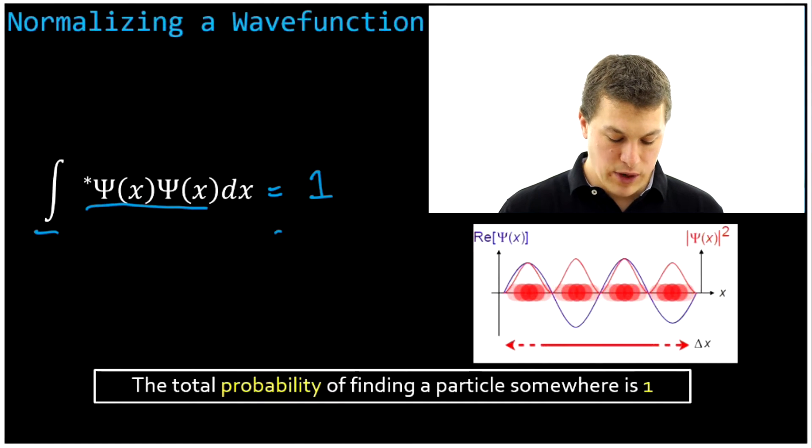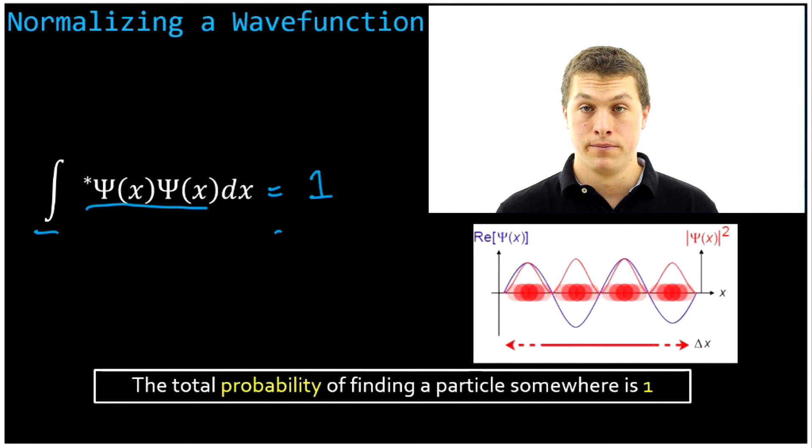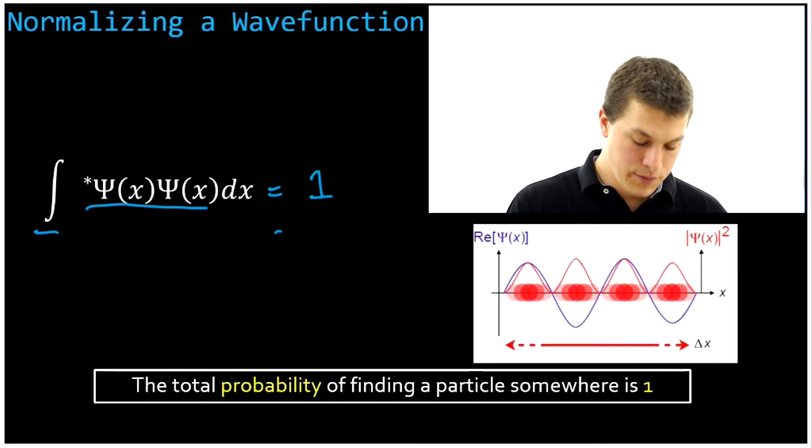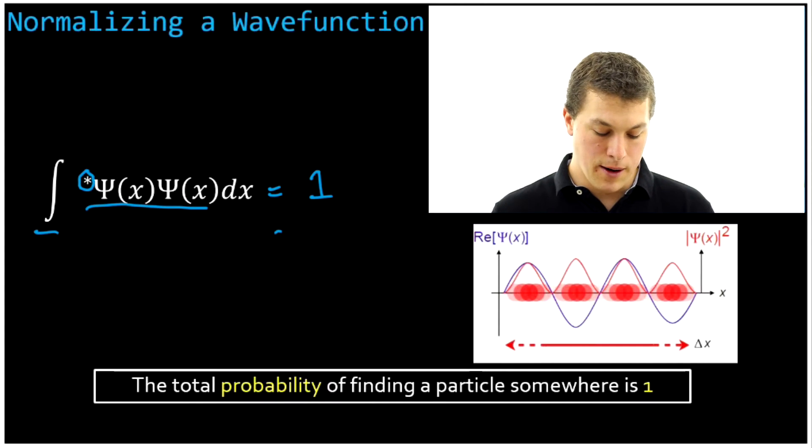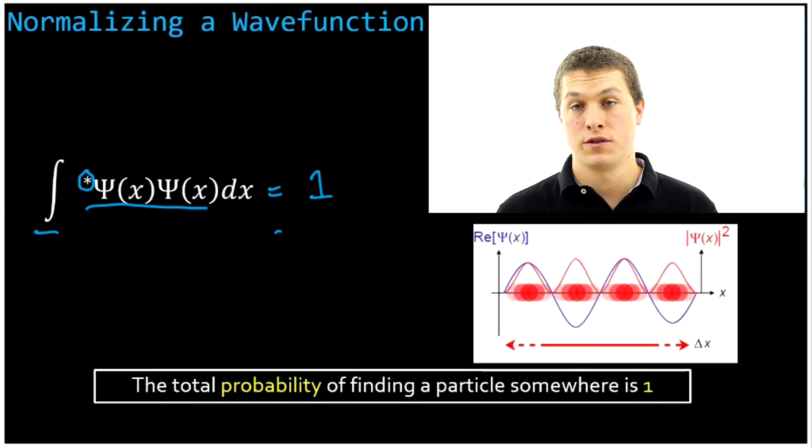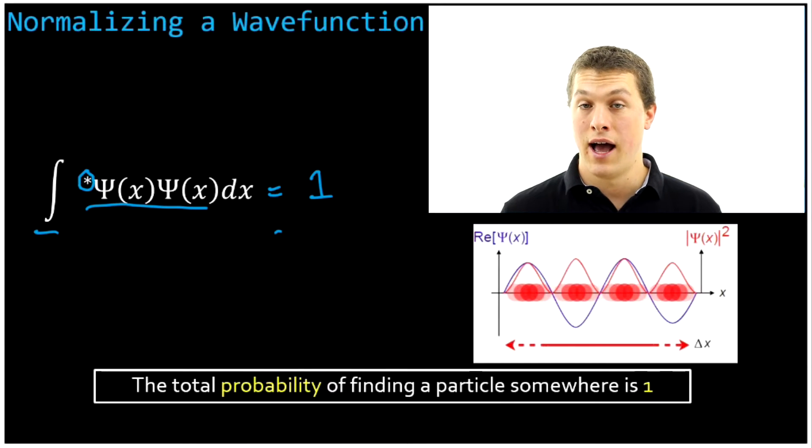This turns out to be the wave function square, but it's written a little differently. This is where that RE thing comes in. Notice that star there. That asterisk tells me that that part of the wave function is what's called the complex conjugate. And all that means is that if our wave function has the letter i in it,